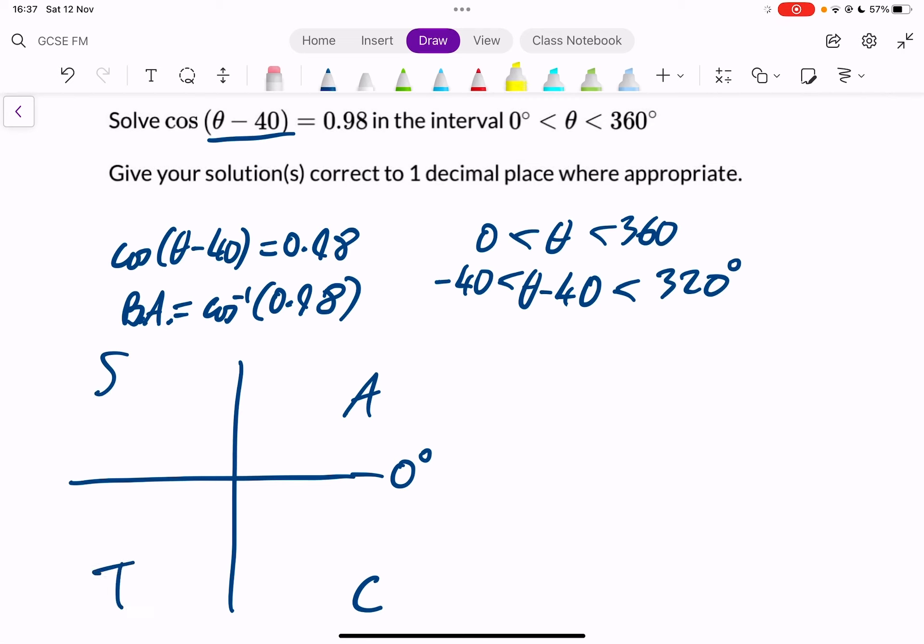And what that means, here all or everything is positive. Here only the sine is positive. Here only the tan is positive. And here only the cos is positive.